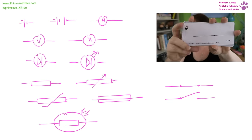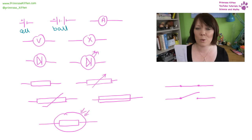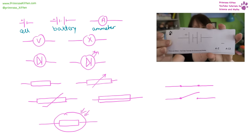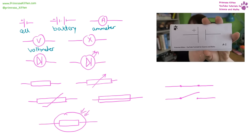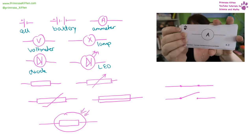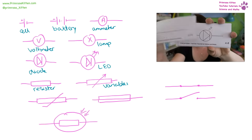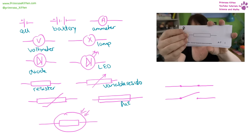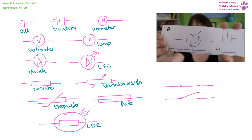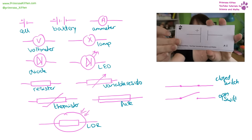You need to know all of these circuit symbols — I've made you handy flashcards for this but here is a quick recap. This is a cell, this is a battery. You'll notice that a battery is more than one cell put together. Here we have an ammeter, voltmeter, a lamp or bulb, diode, an LED — light emitting diode — resistor, variable resistor, fuse, thermistor, LDR — light dependent resistor — closed switch, and open switch.